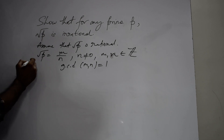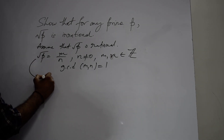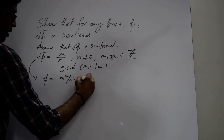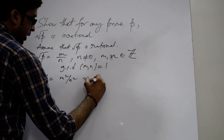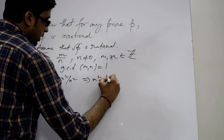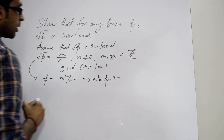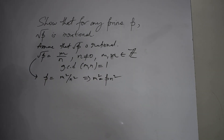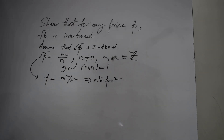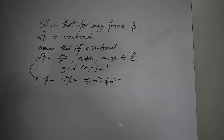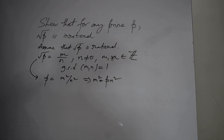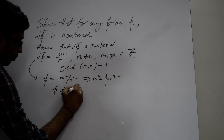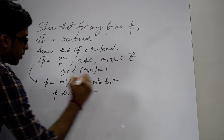Now if we square this relation, we will get p equals m squared by n squared. From here we can write m squared equals p times n squared. Therefore, clearly we can say that p is a factor of m squared.